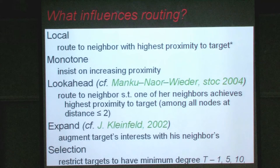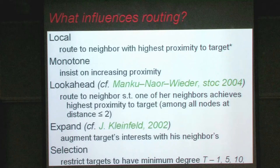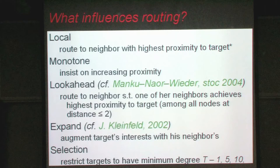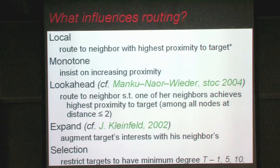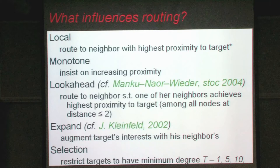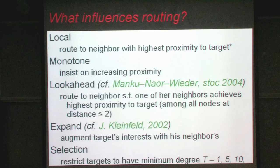We're going to start routing a large number of messages from randomly chosen nodes to randomly chosen destinations, to understand what things influence local routing algorithms. The purely local algorithm routes to the neighbor with the highest proximity to the target. If there's no neighbor with non-zero proximity to the target, you abandon. We keep track of the path discovered so far, and if the only neighbors with non-zero proximity to the target are already in this path, you abandon also. We can add a constraint that says insist on increasing proximity — you don't even take temporary bad steps before you get better.